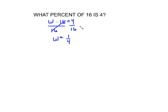Now if you're using a calculator straight from here, 4 divided by 16 gives us the decimal 0.25. That's a decimal. Remember to change it to a percent by moving that decimal point two places to the right. So this equals 25 percent.